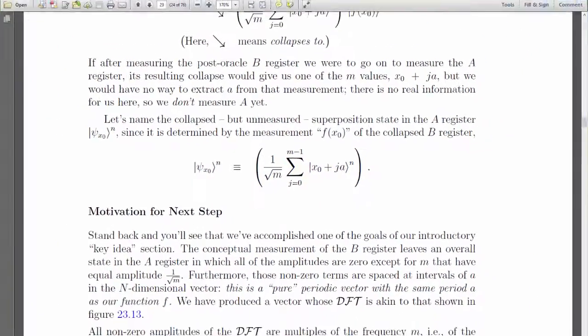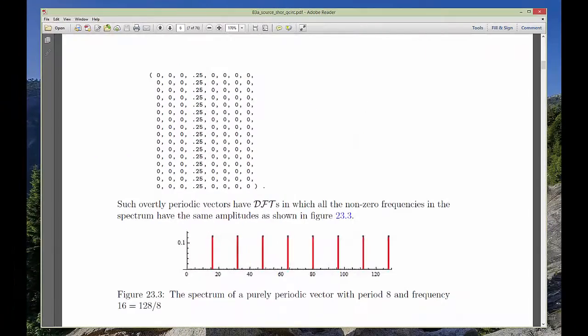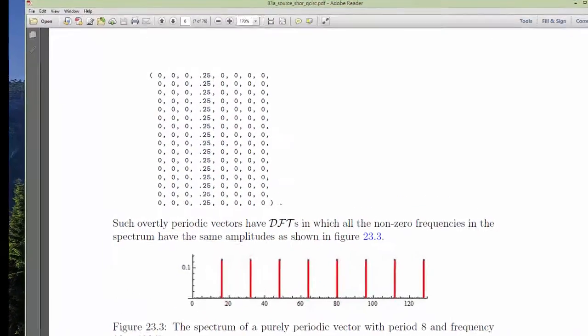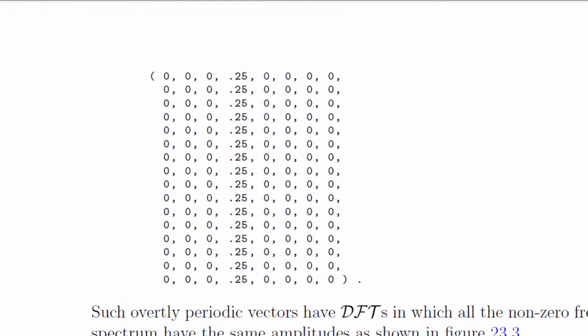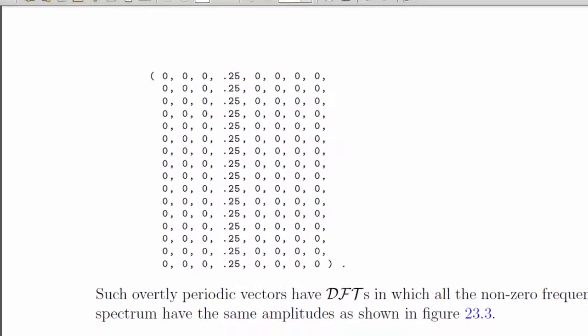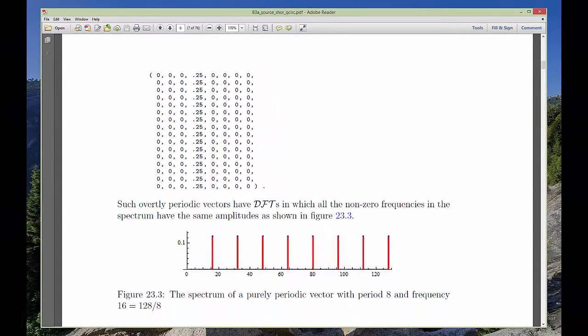We turn our attention next to the A register. What's left there, as evident by the math, is a kind of function that's zero everywhere except for domain points that are separated by our unknown period A. Born's collapse manages to produce a perfectly pure periodic function with the same period A as our original and much easier to study.